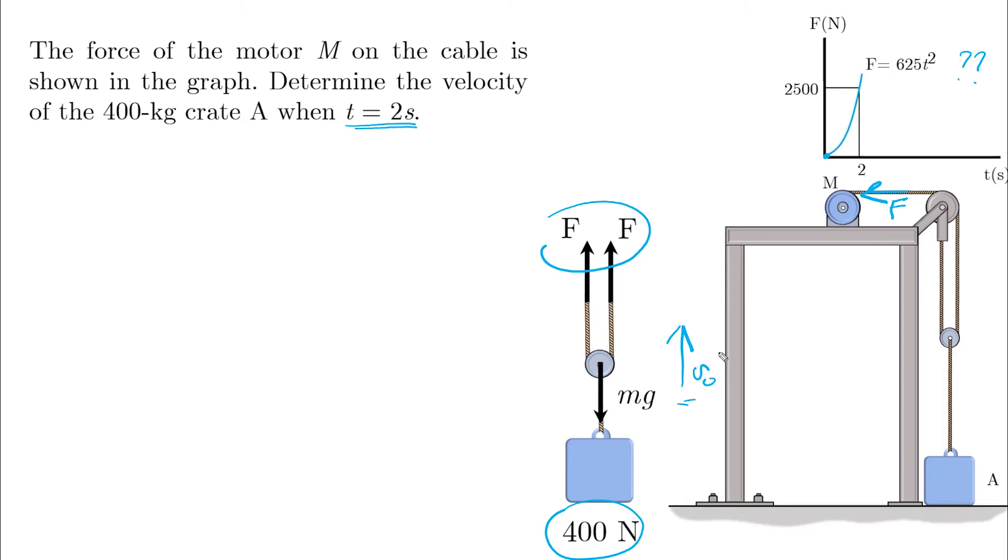All we need to do now is take the summation of forces in the y direction equals to zero, because we don't know at what time this system will start to move. If we take the positive up, then it's 2F minus mg equals zero. Or we can put it this way: 2F as a function of time equals 400 times 9.81. If we solve for the time, we get t equals 1.77 seconds.